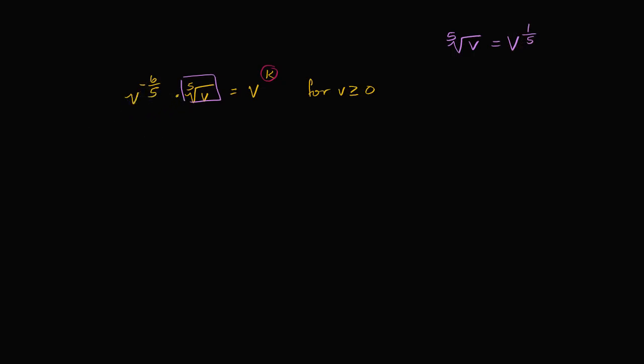So this is going to be the same thing as v to the negative six fifths times, instead of saying the fifth root of v, I can say times v to the 1 fifth power is going to be equal to v to the k. It's going to be equal to v to the k power.